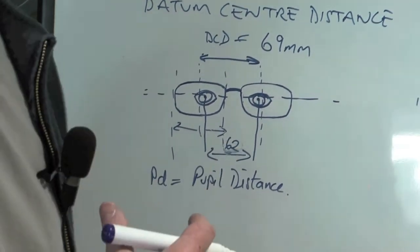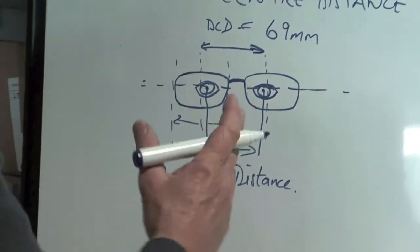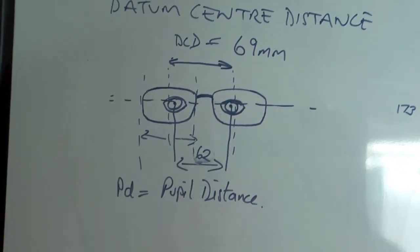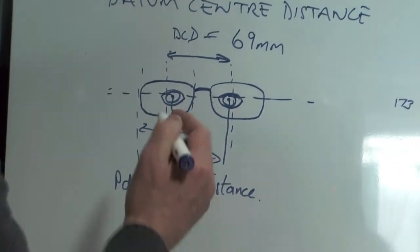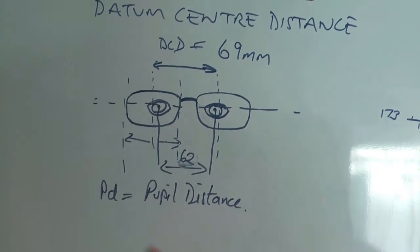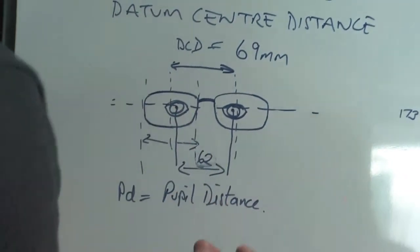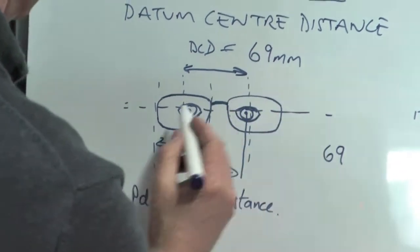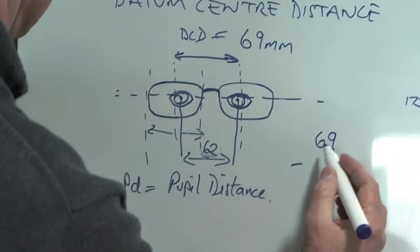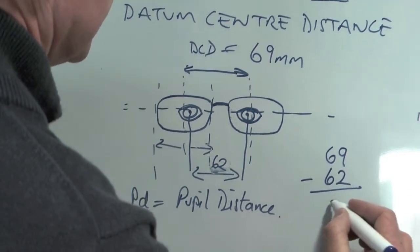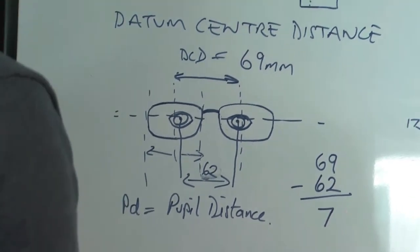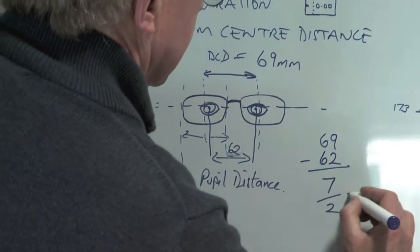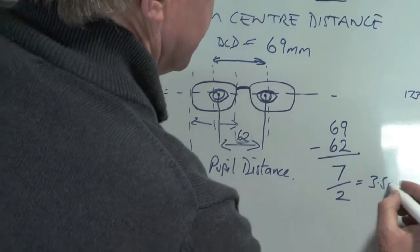So there is a difference. So we need to de-center the lenses in the right and the left eye to make it 62 millimeters. We can't just cut the lenses so they fit in the middle because they'll be too wide. So to do that we need to take the DCD, which is 69, and then we subtract the PD, which is 62, which equals seven. And then we divide that by two. And that equals three and a half millimeters.